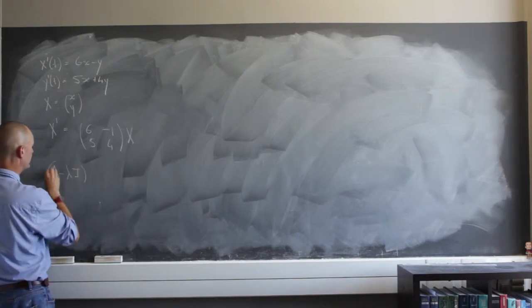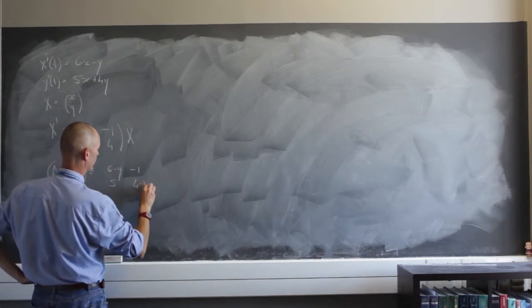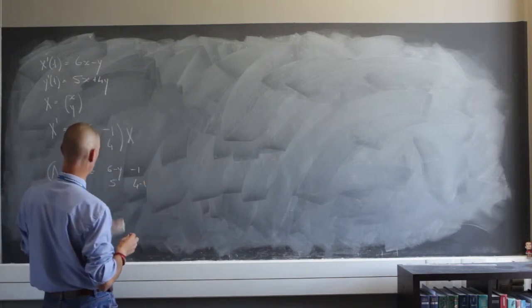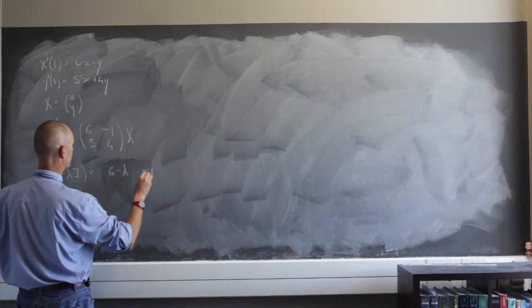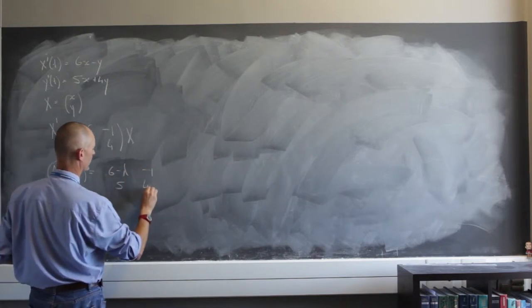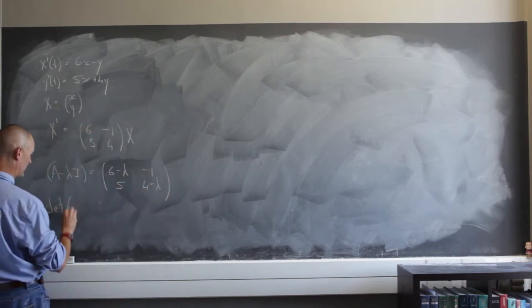So if I just look at A minus lambda I, that is going to equal 6 minus lambda and negative 1, a 5 and a 4 minus lambda. Let's do that. 6 minus lambda, negative 1, 5 and 4 minus lambda. And if I get the determinant of this, determinant of A minus lambda I.